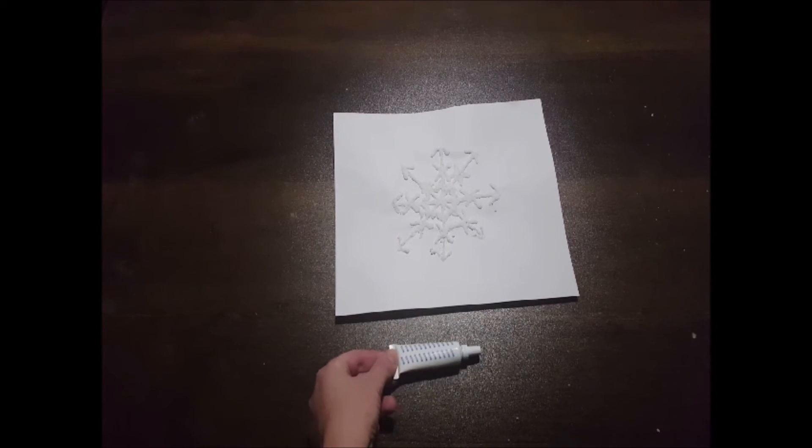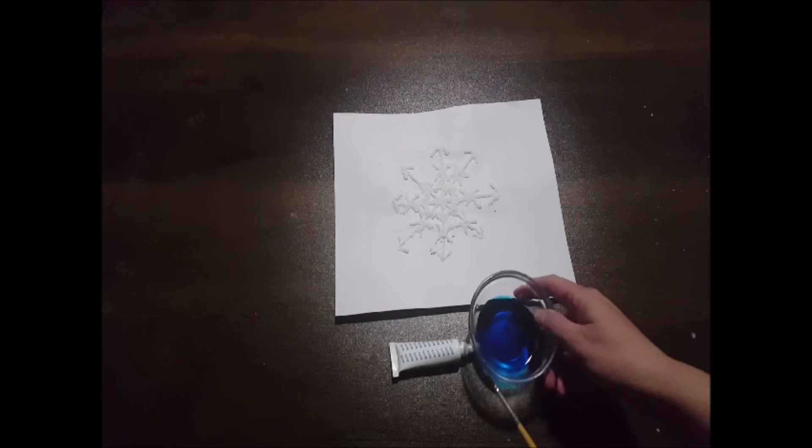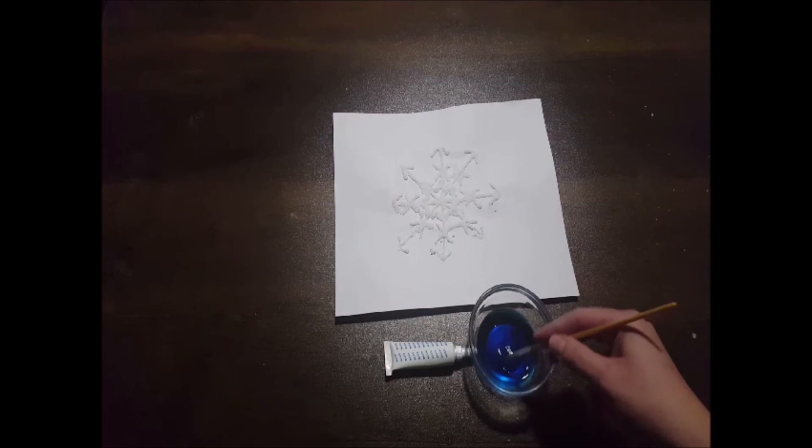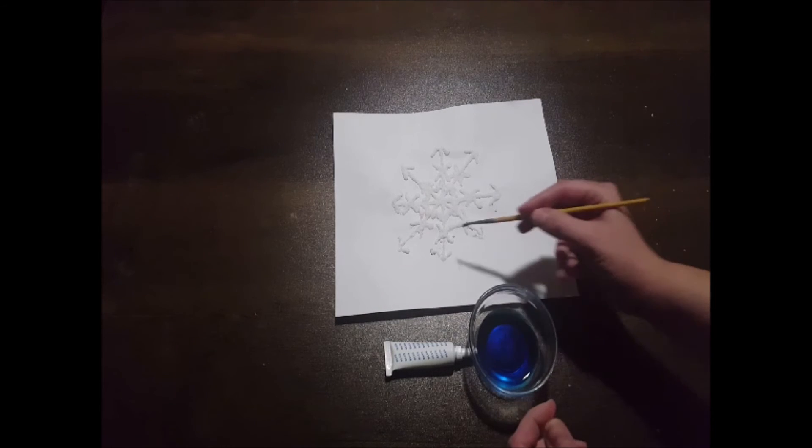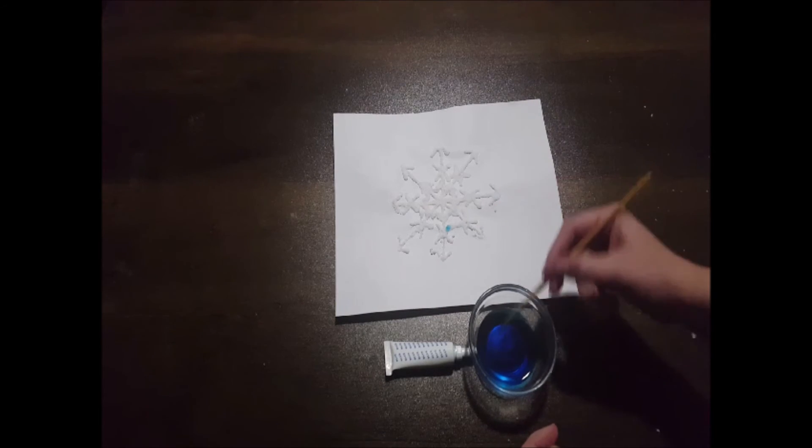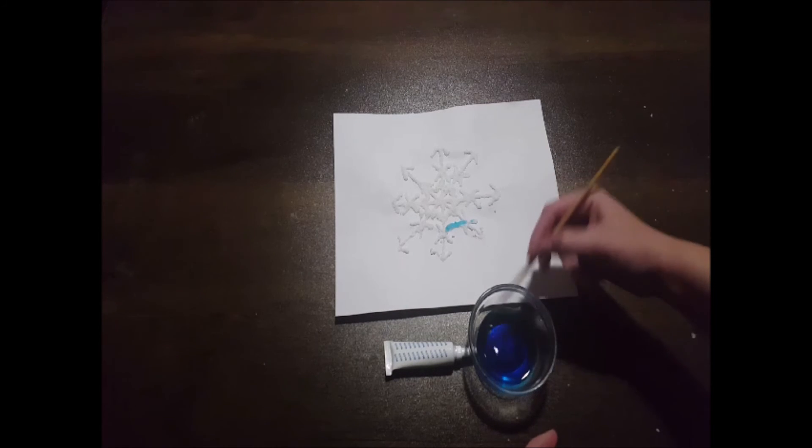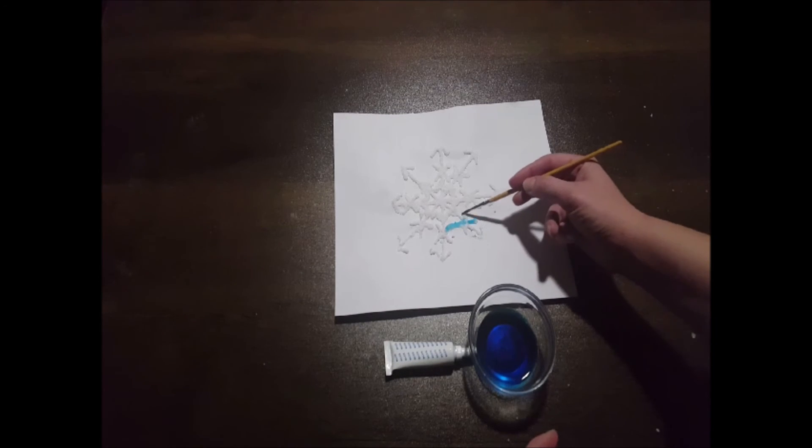You don't need a lot of water for this and the more food coloring you apply the more intense the color is going to be. I used about three or four drops so go ahead and get your paintbrush very wet and apply the wet paintbrush gently to the salt. You'll see the salt absorb the color.